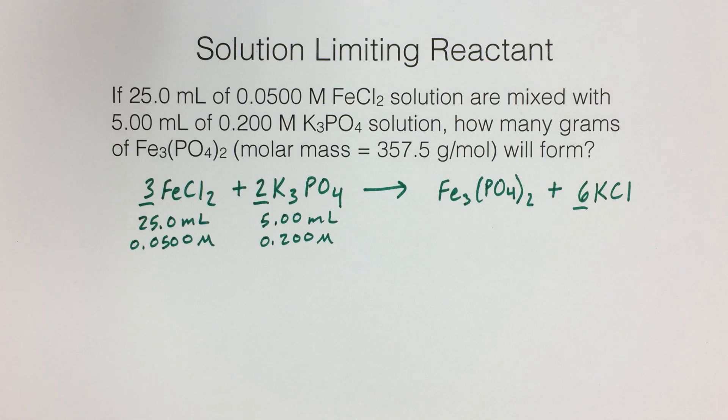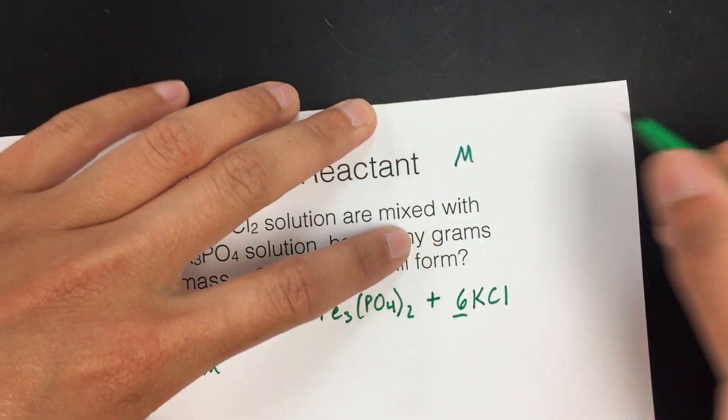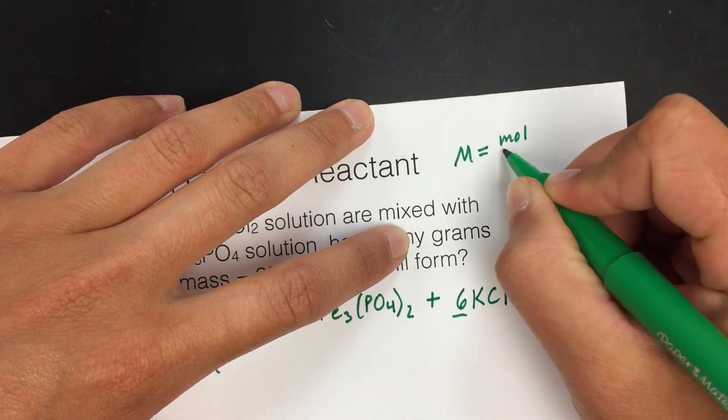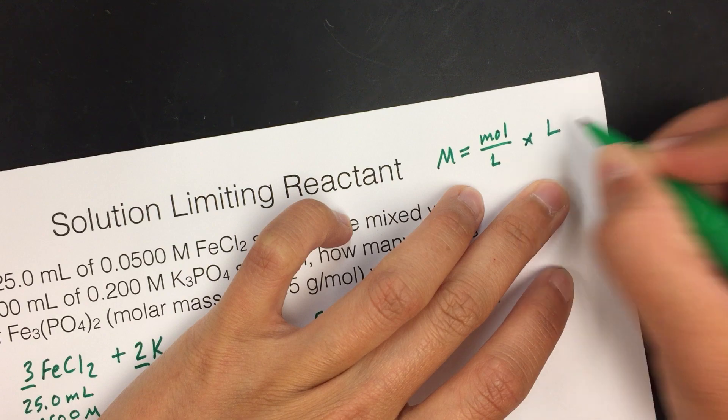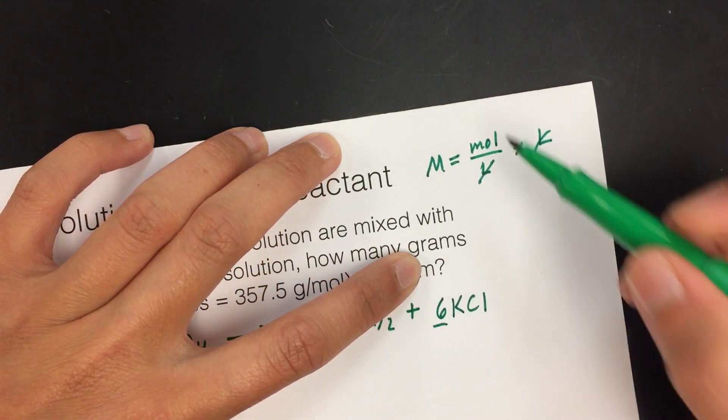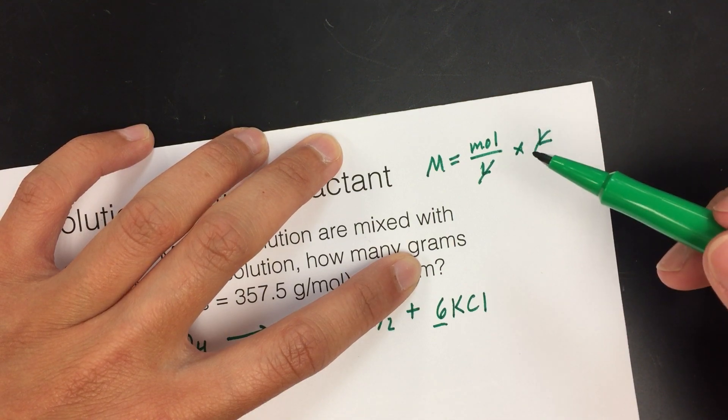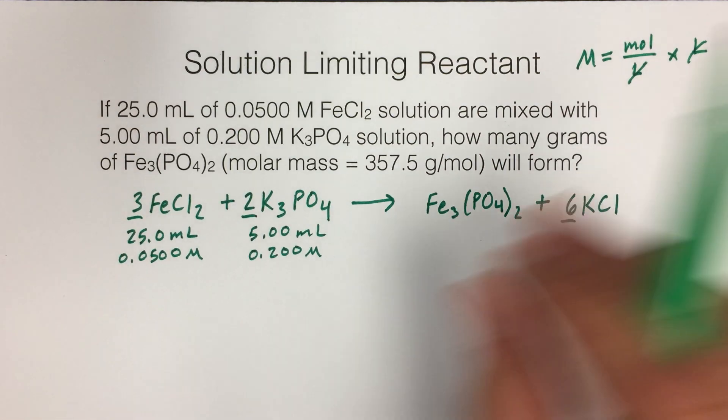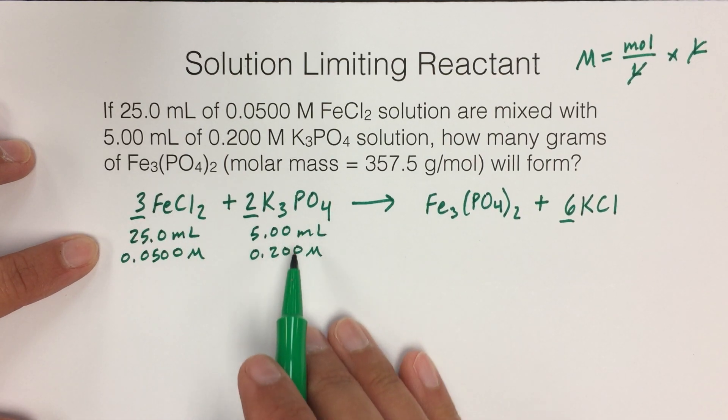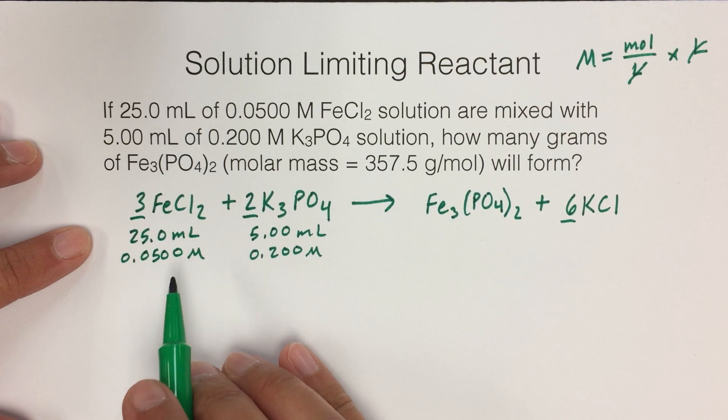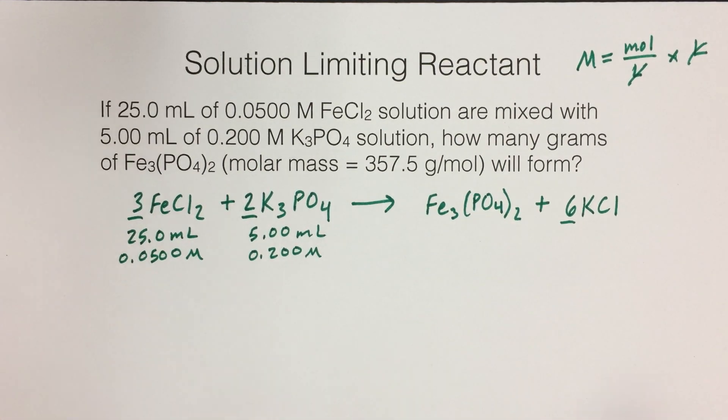This is kind of similar to solution stoichiometry, where the first thing we're going to want to do is use the information about the concentration to get moles. Molarity, capital M, the units that are in there are moles on top and liters on the bottom. So if we take the concentration and multiply it by the volume in liters, then they'll cancel and we'll be left with moles, which is a really useful thing when we're doing stoichiometry. Because we know that the mole ratios will help us go from one substance to another using the balanced chemical equation. So what we can do for both iron(II) chloride and potassium phosphate is use the volume and the concentration to calculate how many moles we're starting with in the reaction.